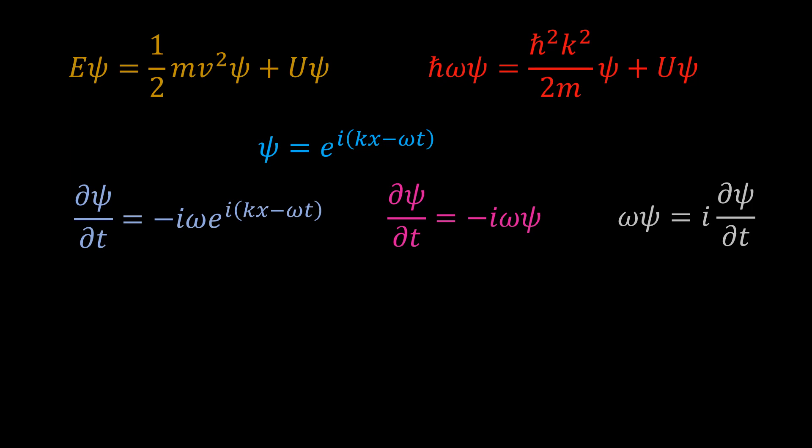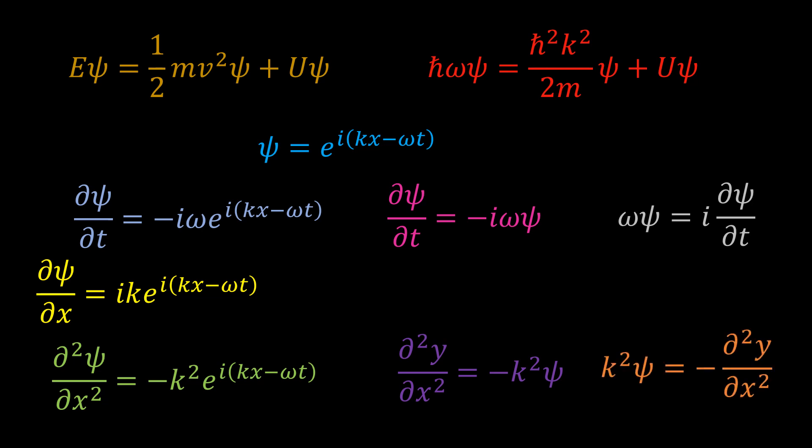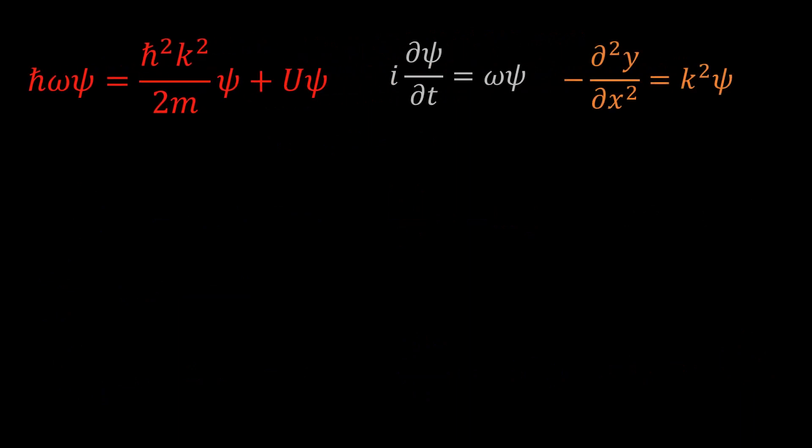Multiplying both sides of the equation by the complex number i yields omega psi equal to i d psi dt. Let's keep this aside for a moment. If we now differentiate psi with respect to x, we get ik times the exponential function. But I look at my energy equation and see k, not k squared. I can get k squared if I differentiate again with respect to x. So the second derivative with respect to x is equal to minus k squared psi. Multiplying both sides of the equation by minus 1 yields k squared psi equal to minus d squared psi dx squared.